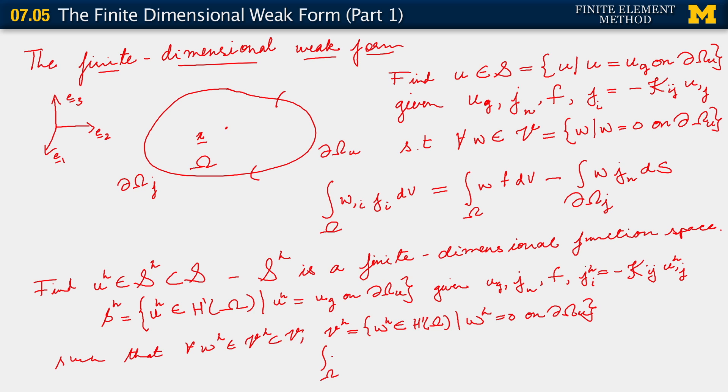integral over omega, w h comma, sorry, I'm lapsing into my notation for the 1D problem. w h comma i j h_i dv equals integral over omega w h f dv minus integral over the Neumann boundary, w h j_n ds.